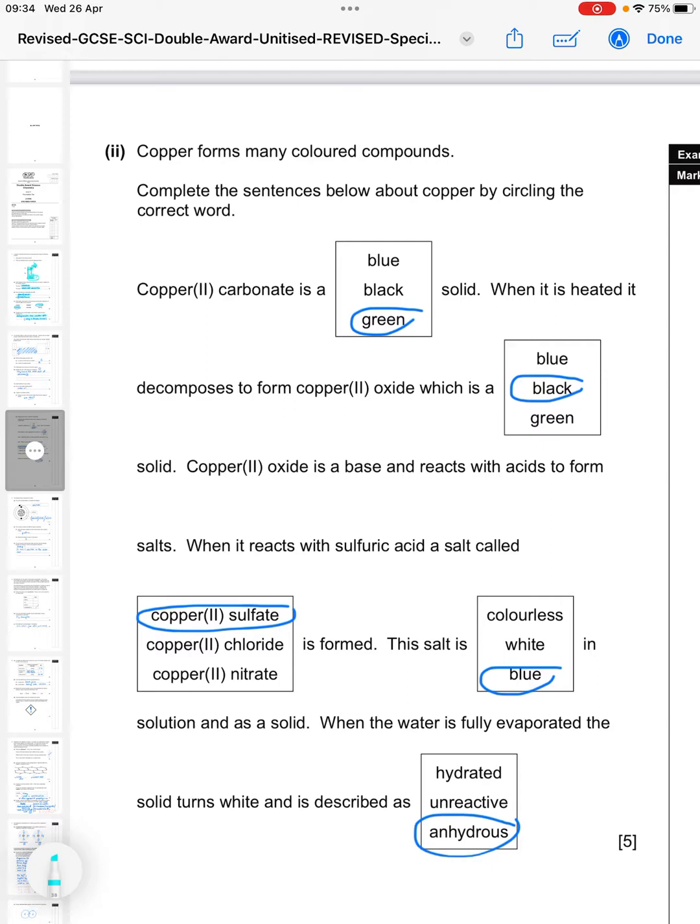Next part, copper forms many colored compounds. Complete the sentences below about copper by circling the correct word. Copper(II) carbonate is a green solid. When it's heated, it decomposes to form copper(II) oxide, which is a black solid. Copper(II) oxide is a base and reacts with acids to form salts. When it reacts with sulfuric acid, a salt called copper sulfate is formed. The salt is blue in solution and as a solid. When the water is fully evaporated, the solid turns white and is described as anhydrous.